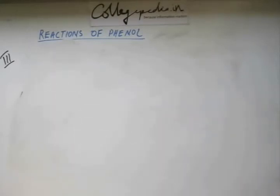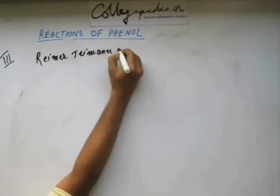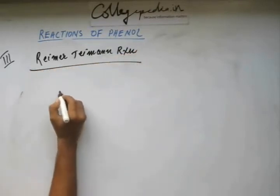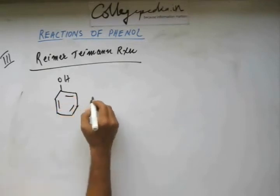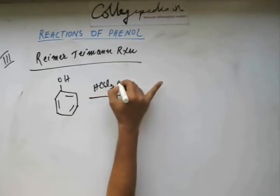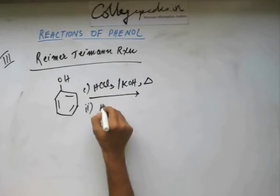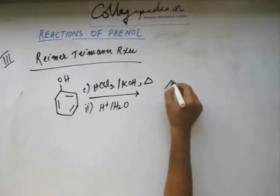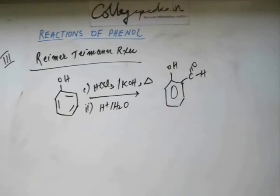Let's move on to a very important reaction in this category in which something will be added to the benzene ring — that very important reaction is the Reimer-Tiemann reaction. In this reaction, we take phenol, add chloroform and base, heat it, then add H⁺ and H₂O. When we do that, we get salicylaldehyde. Now first of all, get yourself familiar with the name of the reaction: Reimer-Tiemann reaction.